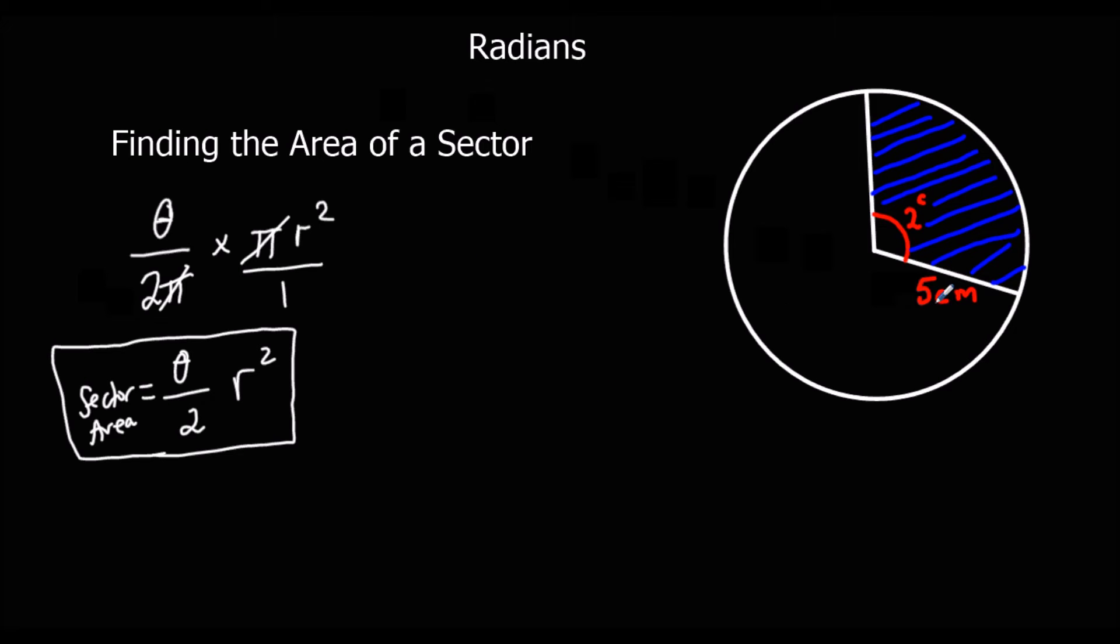So in this example here, theta is two and r is five. So the sector area here is two over two times five squared. So one times five squared, and that would be 25 centimeters squared.